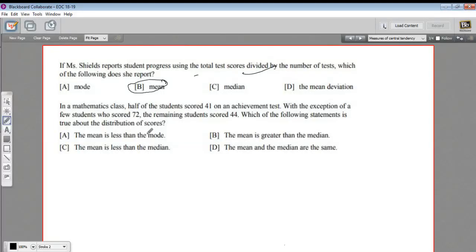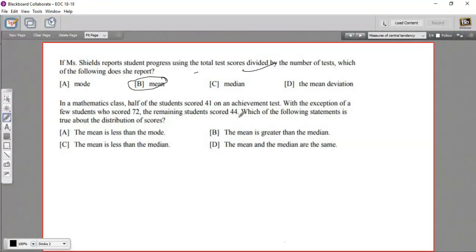All right. One more. And this is a little more tricky. So we're going to have to do some thinking about this last one. It says, in a mathematics class, half of the students scored 41 on an achievement test, with the exception of a few students who scored 72. The remaining students scored 44. Which of the following statements is true about the distribution of scores? All right. Well, let's think about this. I've got half the students. I'm just going to put a big block here. I don't know how many this is, but they scored a 41. And then I've got another chunk, pretty big chunk, but not quite half, that scored 44. And I've got a few up here who scored 72. All right. And this is the halfway mark right here. So this is half the students on the left and half the students on the right.